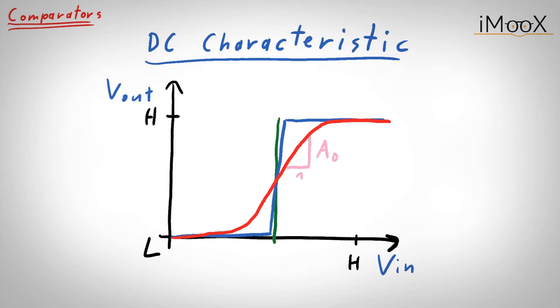Nevertheless, we are still left with a range that we will call delta V_in, where the input voltage is not clearly mapped to either a high or a low output level. In some applications, we need the output signal to appear at a specific point in time, as this is the case in clocked digital logics.